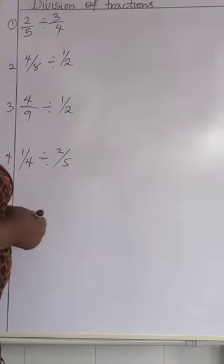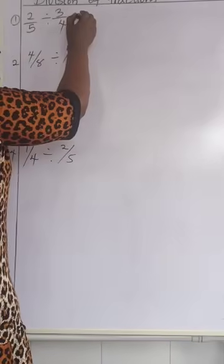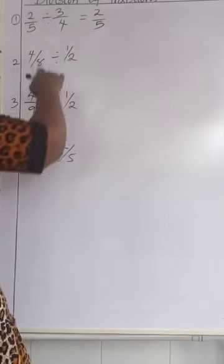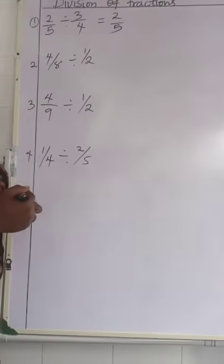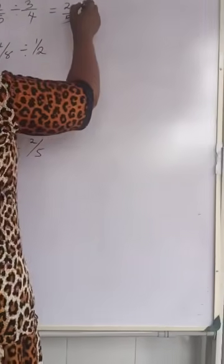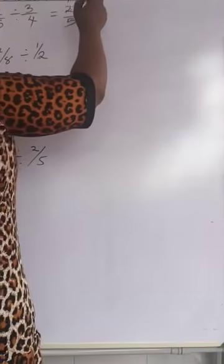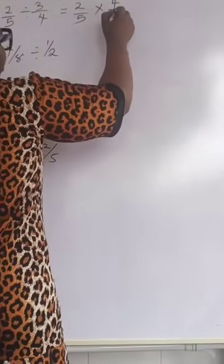Just pay attention to the steps. Now we have 2 over 5. Write it here. This division sign, for us to change it to a multiplication, we are going to have a reverse of this. The inverse is going to give us 4 over 3.